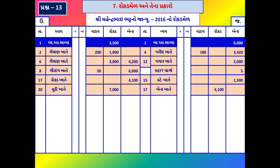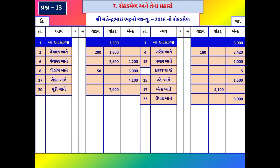તારીખ 23 નો વ્યવાર: દીકરીની શાળાની ફી ભરવા રૂ. 6,000 બેંકમાંથી ઉપાડ્યા. દીકરીની ફી એ અંગત ખર્ચ છે; અંગત ખર્ચ હંમેશા 'ઉપાડ ખાતે' નોંધવામાં આવે. અહીં રકમ (બેંકમાંથી) ગઈ.